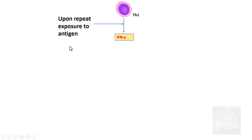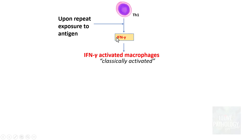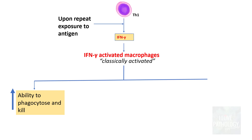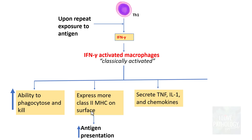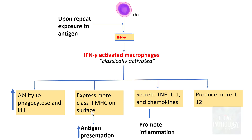On repeat exposure to antigen, T helper 1 secretes large amounts of interferon gamma, which further activates macrophages — referred to as interferon gamma activated macrophages. These have increased ability to phagocytose and kill pathogens, express more class 2 MHC molecules increasing antigen presentation, secrete tumor necrosis factor, interleukin 1, and chemokines promoting inflammation, and produce more interleukin 12, which amplifies the T helper 1 response, recruiting more T helper 1 cells.